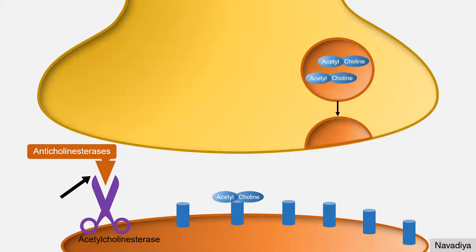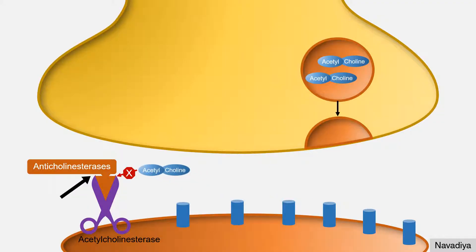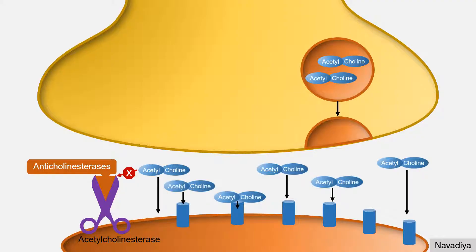Anticholinesterases are a group of drugs that inhibit this enzyme. As a result of inhibition, acetylcholine is not hydrolyzed and gets accumulated in the synaptic space, which in turn produces prolonged and more intense action on post-synaptic membrane.